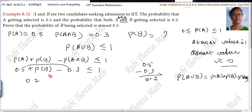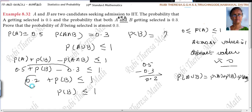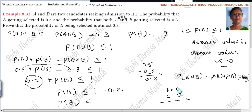So, 0.2 + P(B) ≤ 1. Moving 0.2 to the other side, P(B) ≤ 1 − 0.2. Since 10 minus 2 is 8, we get P(B) ≤ 0.8.